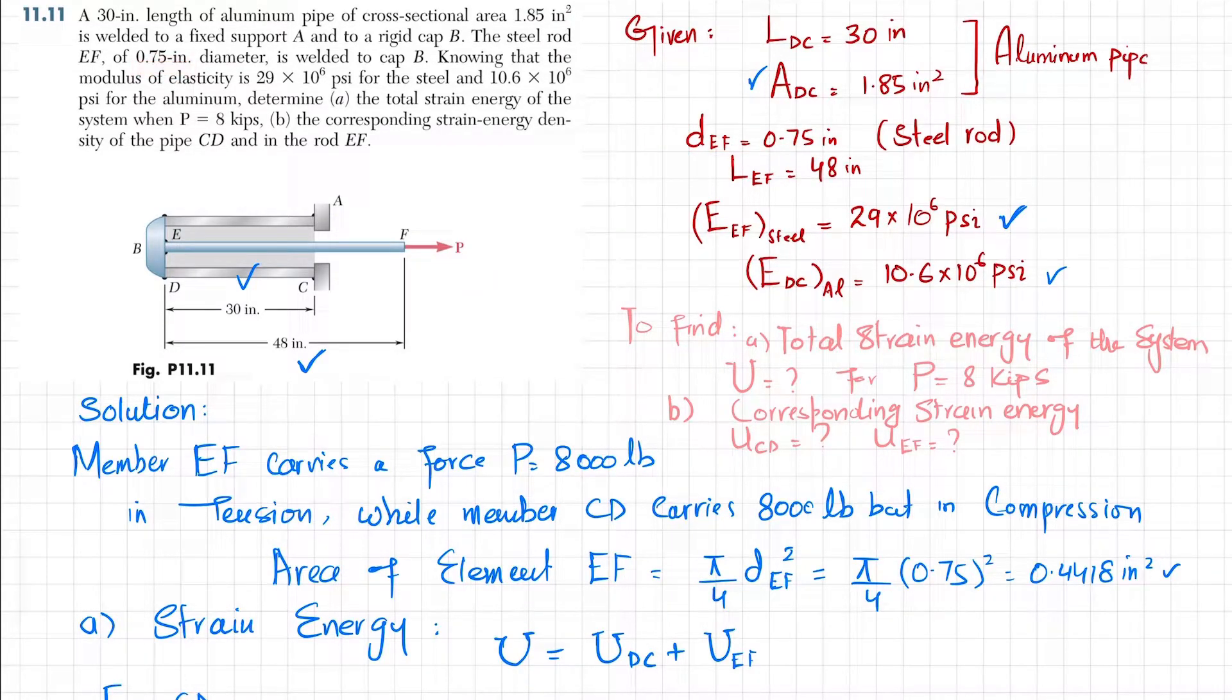The length of EF is 48 inches. E for steel is 29 × 10^6 psi, while the modulus of elasticity of aluminum pipe is 10.6 × 10^6 psi. What we have to find is: part A, the total strain energy of the system U when P is 8 kips, and part B, the strain energy density in CD and EF.